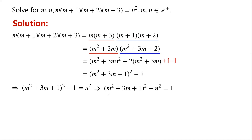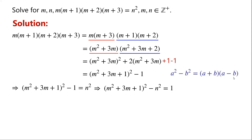The original equation can therefore be written as (m squared plus 3m plus 1) squared minus 1 equals n squared. Rearranging, we get (m squared plus 3m plus 1) squared minus n squared equals 1.